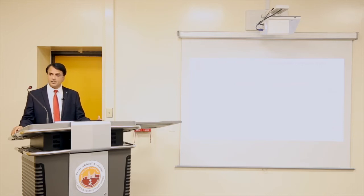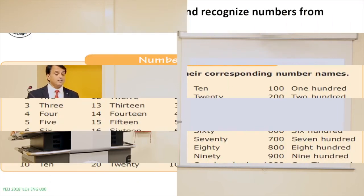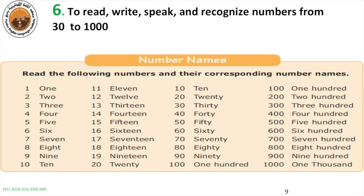Our next objective for these two weeks, which is objective number six, is that the student should be able to read, write, speak, and recognize different numbers, especially from 30 to 1,000, because they have already covered from 1 to 20. So in these two weeks, they will go from 30 onward. Students should be able to mention the numbers as digits and also be able to spell and name the number. For example, they should know the spelling of 30: T-H-I-R-T-Y. In this way, from 30 to 200, 300, and then 1,000, 2,000, etc.